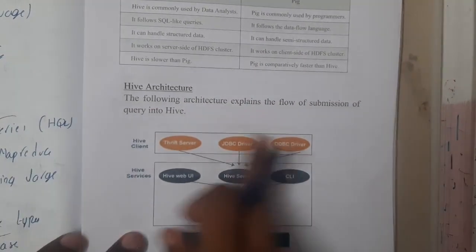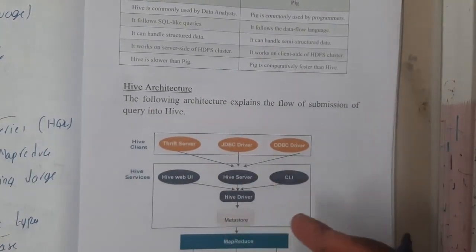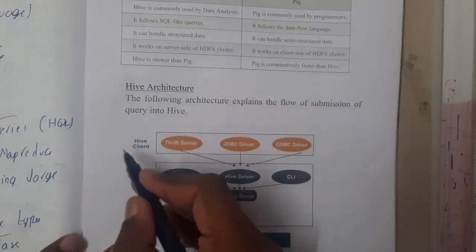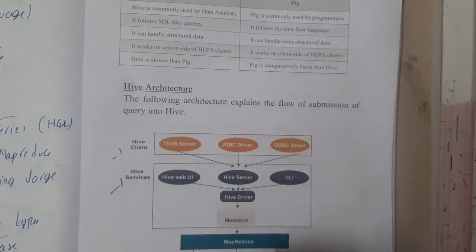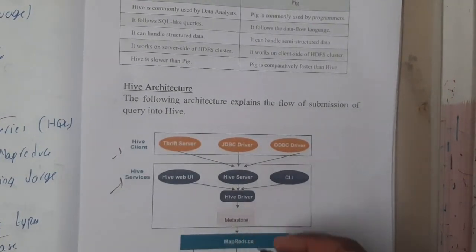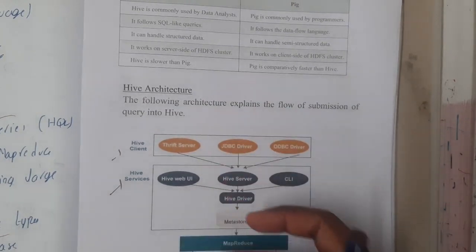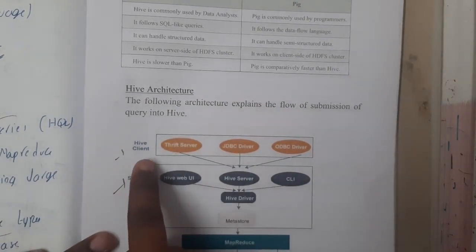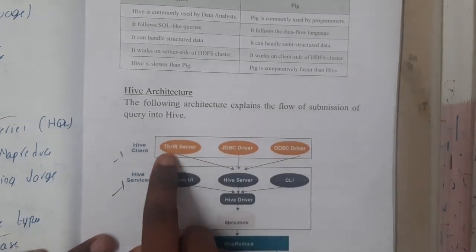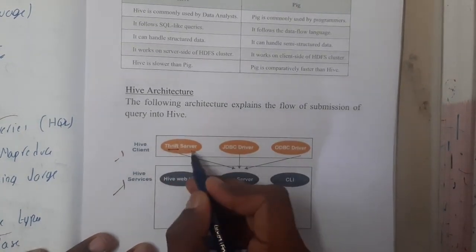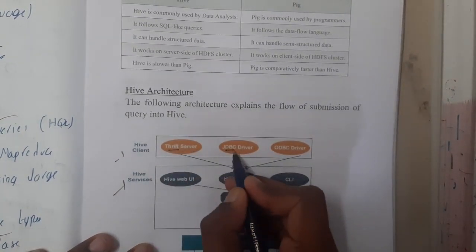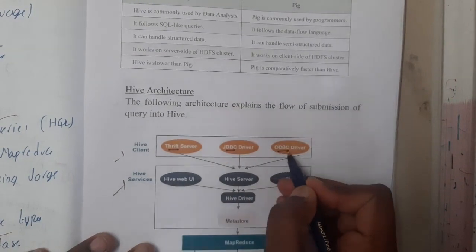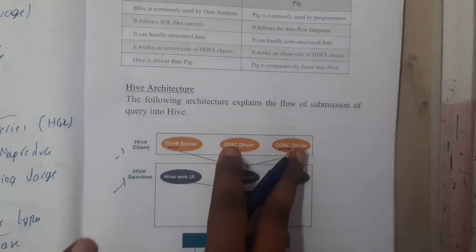Now let us go through the Hive architecture. It has three different layers: the first is the Hive client, then the Hive server, and after that we have MapReduce and HDFS. This is also built on MapReduce. In the Hive client, we have three different drivers: Thrift Server, JDBC driver, and ODBC driver.